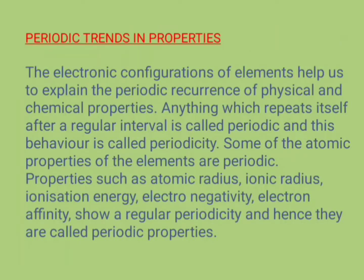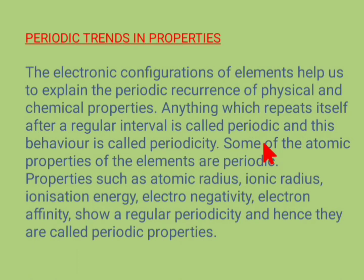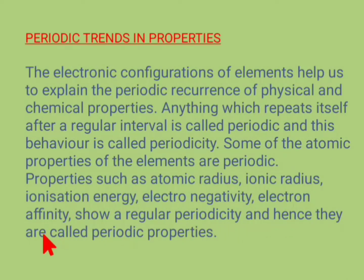Moving on to the next topic: periodic properties. The modern periodic table is based upon the electronic configuration of the elements, and it helps us explain the periodic recurrence of physical and chemical properties. Anything which repeats itself after a regular interval is called periodic, and this behavior is called periodicity. Some atomic properties of elements are periodic: atomic radius, ionic radius, ionization energy, electronegativity, and electron affinity. They show regular periodicity and hence are called periodic properties.